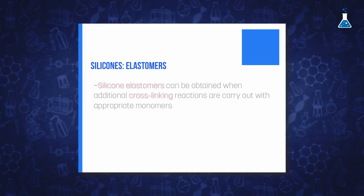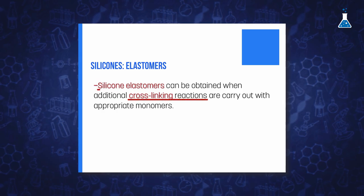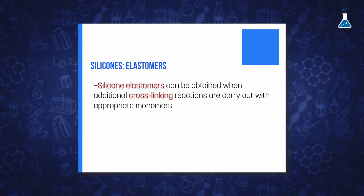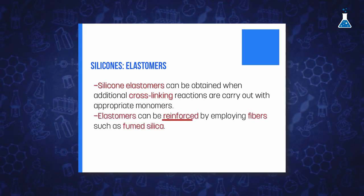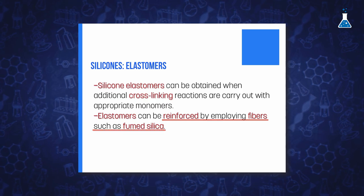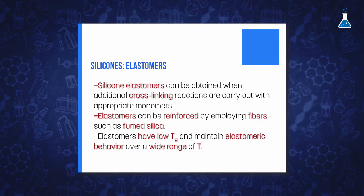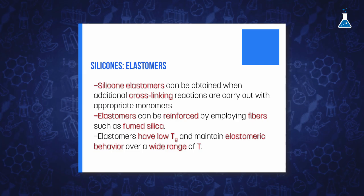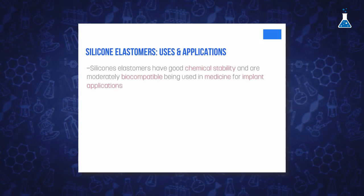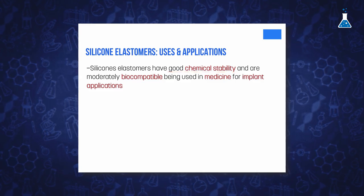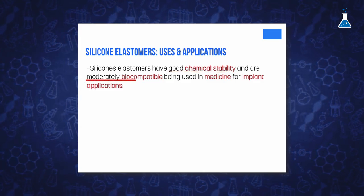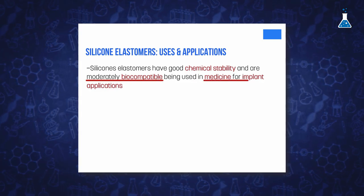When the polymerization process of fabrication of silicones is carried out from a monomer with one or no organic substituent, it is possible to perform additional transformation by cross-linking reaction to give silicone elastomers. In order to increase the strength of the polymer, elastomers are usually reinforced by employing fillers such as fumed silica. Silicone elastomers have a remarkable low glass transition temperature and they maintain elastomeric behavior over a wide range of temperatures, showing good low temperature resistance and great stability at high temperature. They also have good chemical stability, being stable to degradation, and are moderately biocompatible, which makes them very useful in medicine for many implant applications.